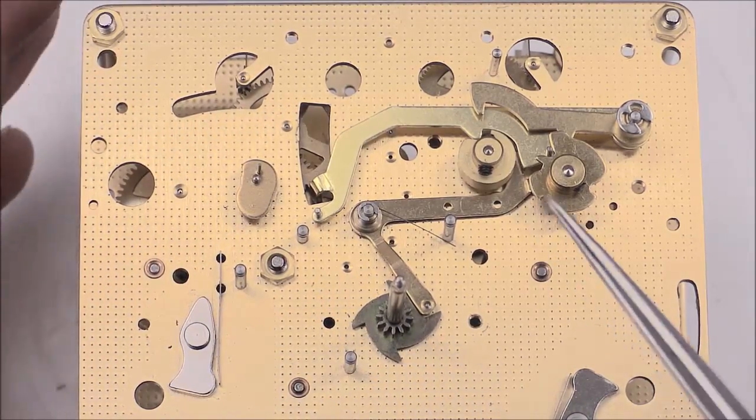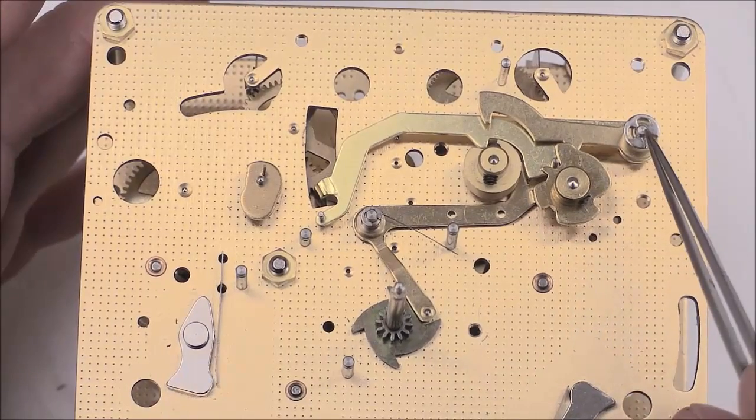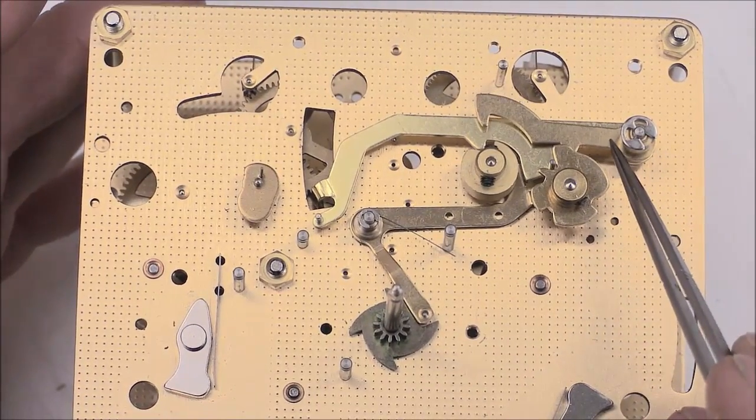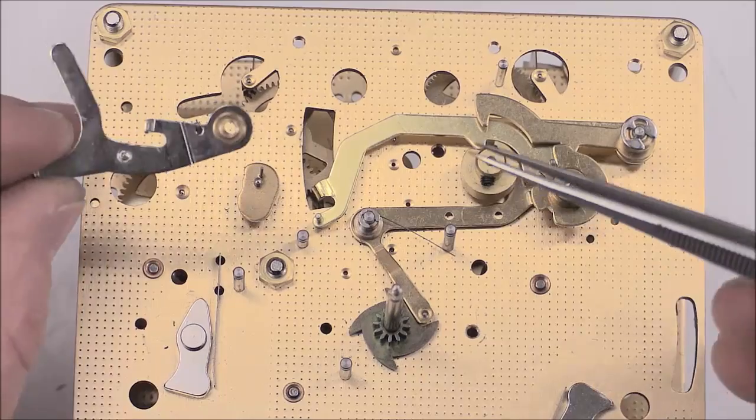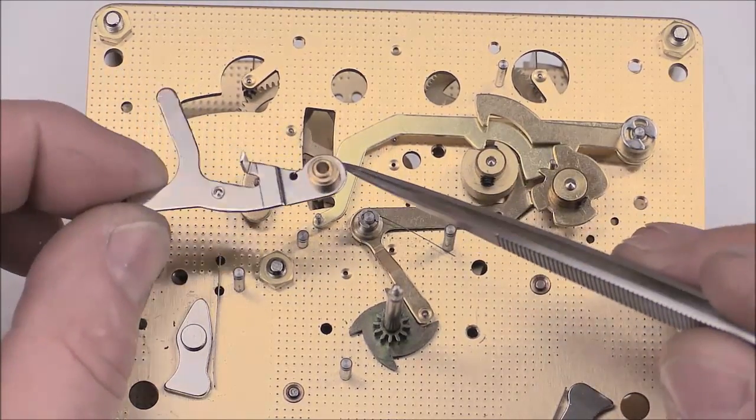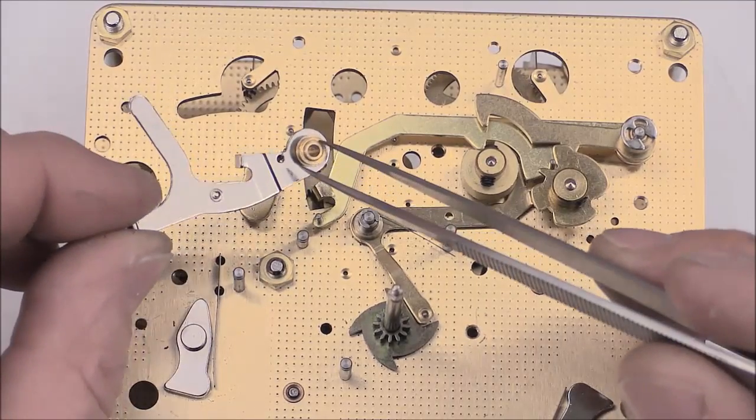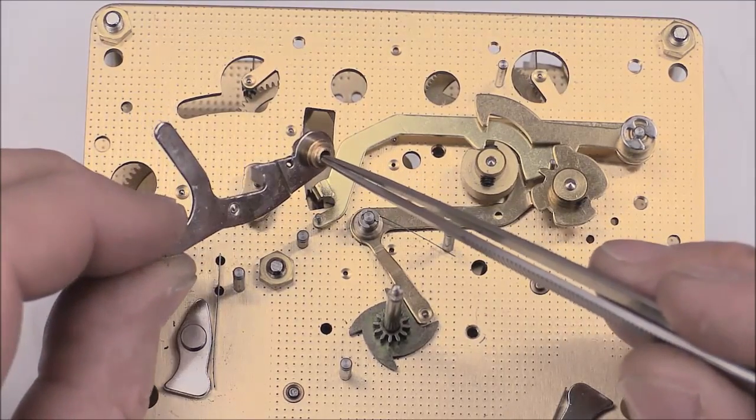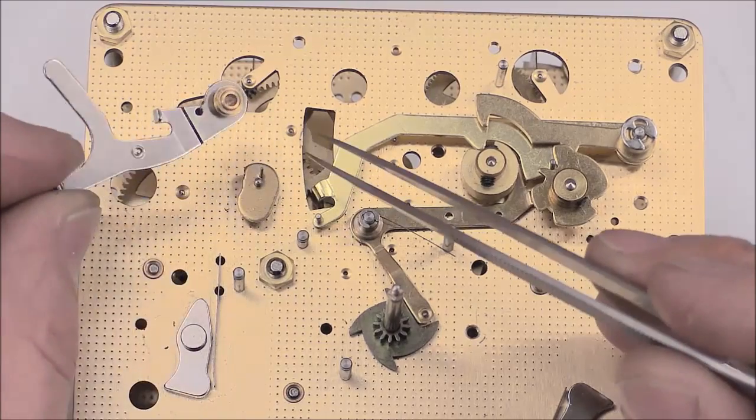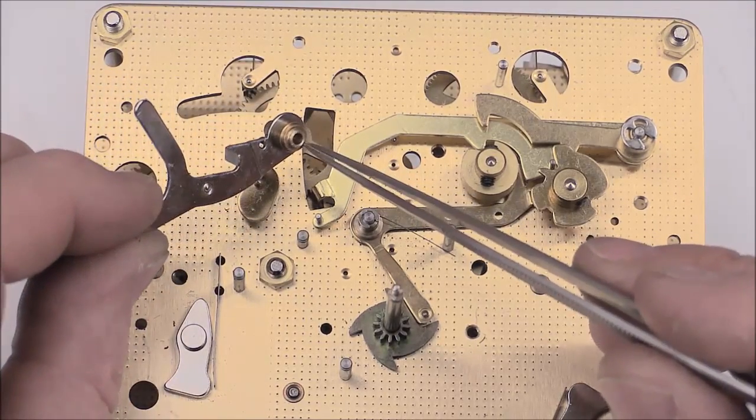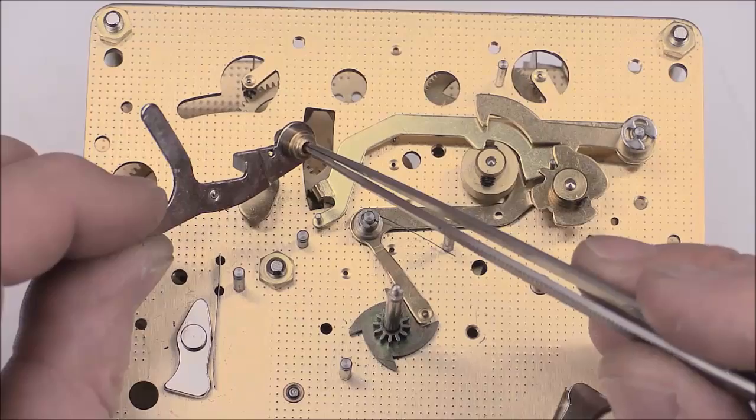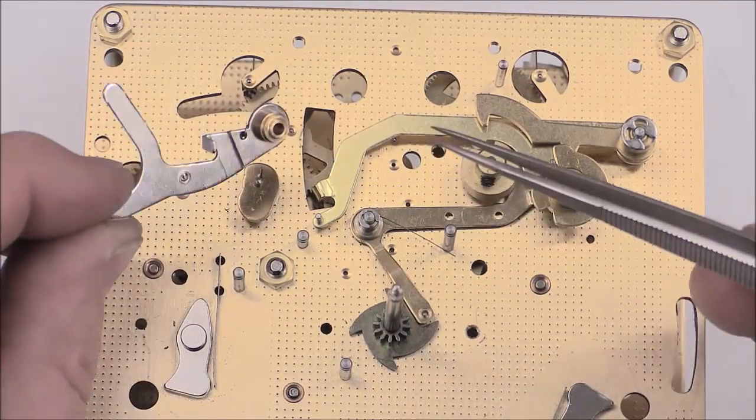Which brings up a good point. These levers, if this movement has been sprayed down with oil, which happens, seems to happen often when I get them in the shop, they've been mistreated. Or somebody has oiled those posts. There's going to be sticky oil in there, so you want to make sure you get those cleaned out.